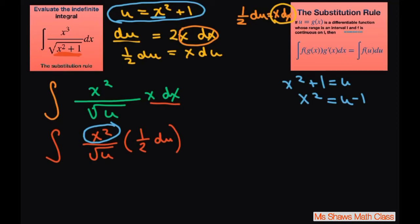Now we can write out the transformed integral. It's going to be the integral of (u minus 1) over square root of u, times du divided by 2.